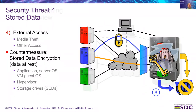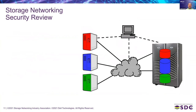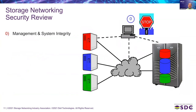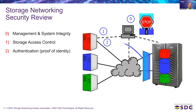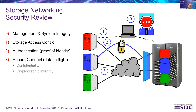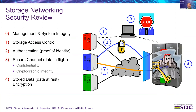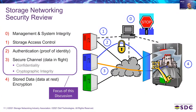So let's do a review of where we are. We have management system integrity as a possible threat, storage access control, authentication, secure channel for data in flight, and stored data encryption. These are the ways to counterbalance all threats in a storage-related environment. The focus of the subsequent discussion will be on authentication — proof of identity — and secure channel for an NVMe over Fabrics IP network.